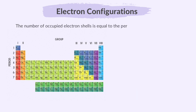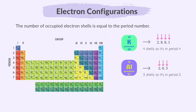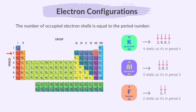The number of occupied electron shells is equal to the period number. For example, potassium has four shells, so it is in period 4. Aluminium has three shells, so it is in period 3. And fluorine has two shells, so it is in period 2.